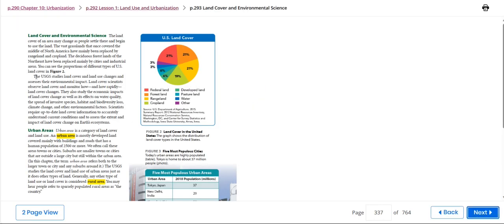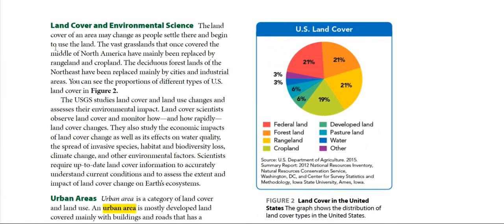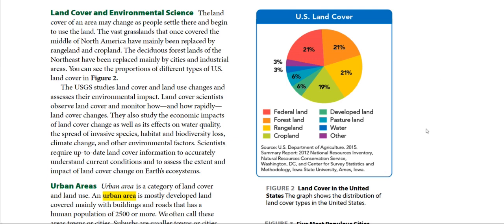Moving to land cover and environmental science: the land cover of an area may change as people settle there and begin to use the land. The vast grasslands that once covered the middle of North America have mainly been replaced by rangeland and cropland. For example, let's look at the U.S. land cover.